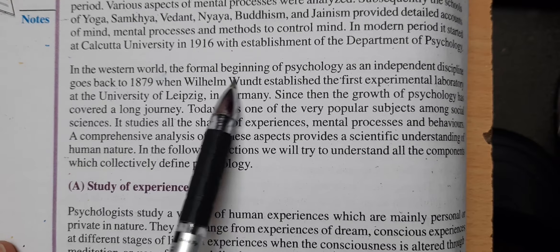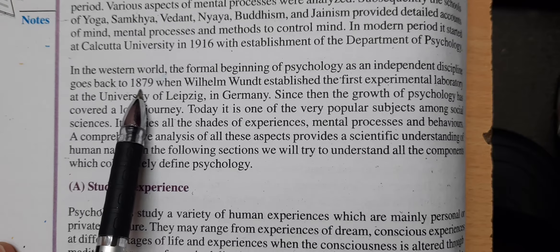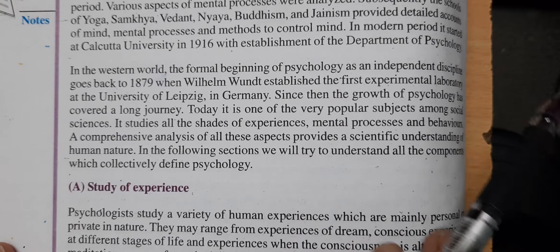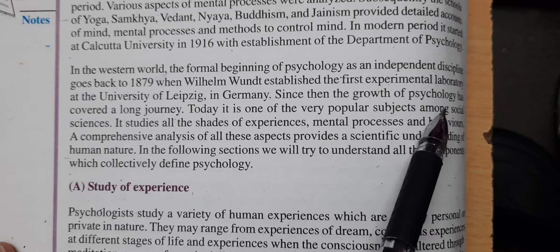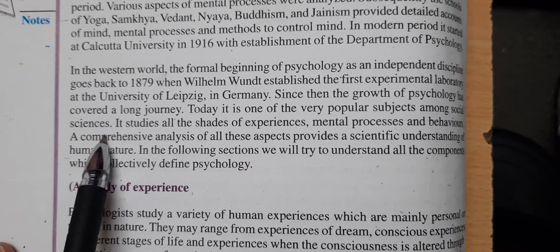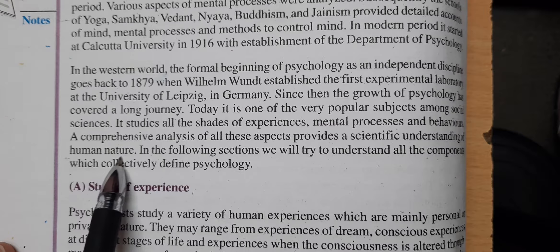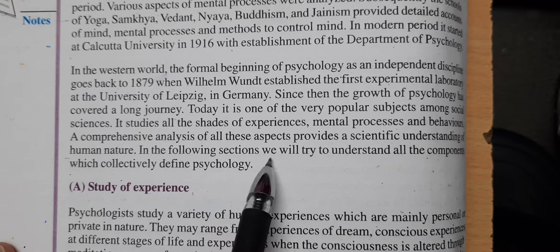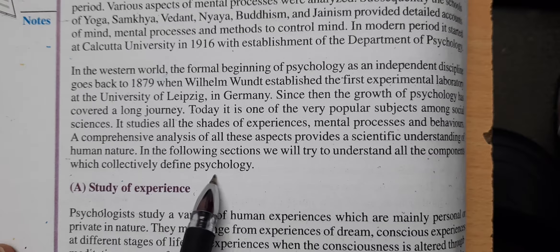In the western world, the formal beginning of psychology as an independent discipline goes back to 1879 when Wilhelm Wundt established the first experimental laboratory at the University of Leipzig in Germany. Since then, the growth of psychology has covered a long journey. Today it is one of the very popular subjects among social sciences, studying all the shades of experience, mental processes, and behavior. A comprehensive analysis of these aspects provides a scientific understanding of human nature.